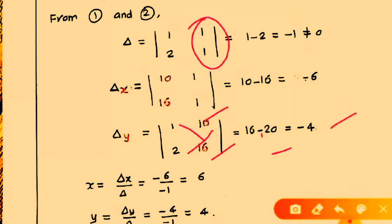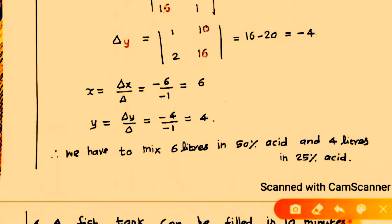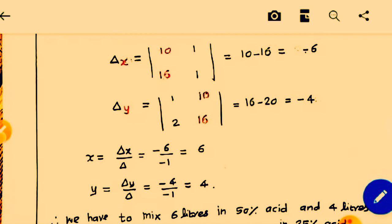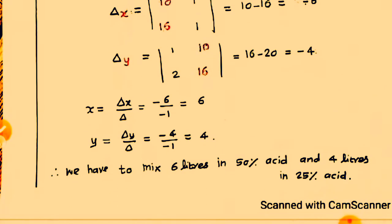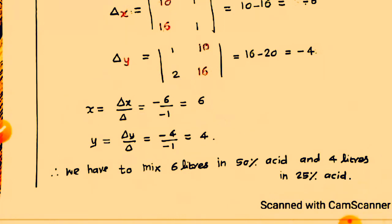Delta Y equals the determinant with 1, 10, 2, 16, which equals 16 minus 20, which is minus 4. So X equals delta X divided by delta. Delta X is minus 6, delta is minus 1, so minus 6 divided by minus 1 equals 6. Y equals delta Y divided by delta. Delta Y is minus 4, so minus 4 divided by minus 1 equals 4. So we have to mix X equals 6 and Y equals 4. We have to mix 6 liters of 50% acid and 4 liters of 25% acid to get the 40% acid solution.